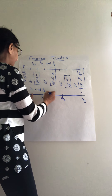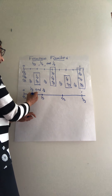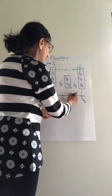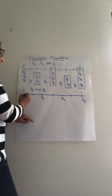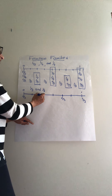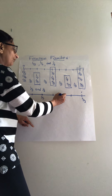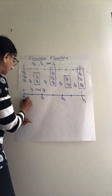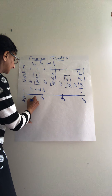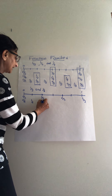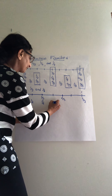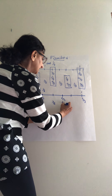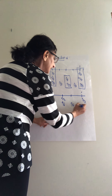Now I will cut each third in half, giving six equal parts: one, two, three, four, five, and six.